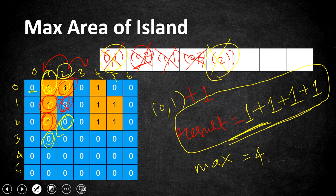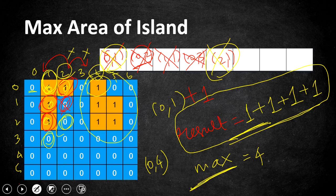After marking visited cells as 0, the main method continues iterating. Cells 0,2 and 0,3 are now 0, and when we reach 0,4 — where a new 1 starts — it calls BFS again for coordinate 0,4. BFS explores its neighbors, finds the area, and returns it to the main method. For this island the area is 5, so max becomes 5 over the previous 4. The final result returned for this binary matrix is 5.